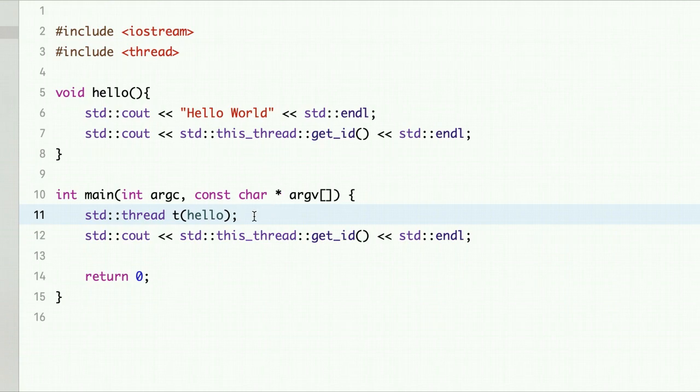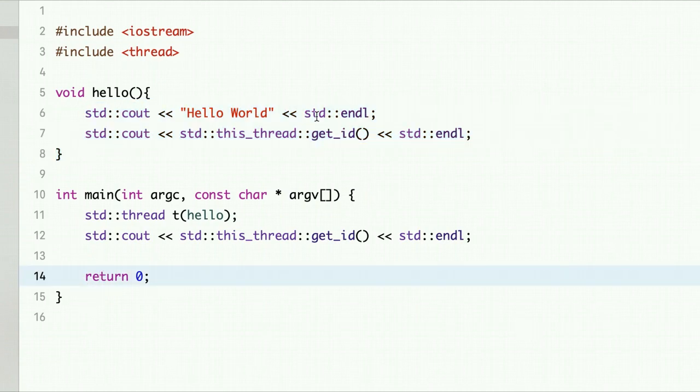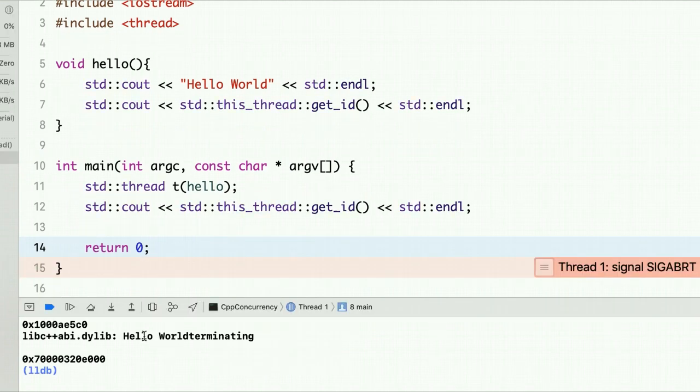Now as I said, if I don't call join, you will see that most likely this will not get a chance to execute and main thread will finish and the program will terminate. So let's run it. You see it crashes the program here because this program has terminated but this thread did not get a chance to execute.